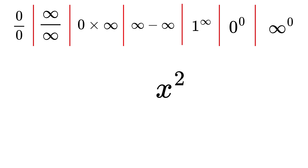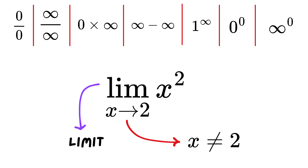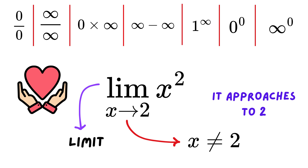Suppose we want to find the value of x squared as x approaches 2. This is the way we write it: LIM stands for limit, and the arrow tells us that x is not equal to 2 but it approaches 2. This is why limits are at the heart of calculus — they let us tackle the infinite, the infinitesimal, and everything in between.